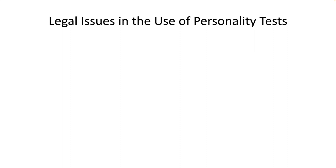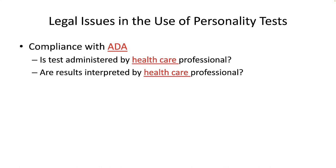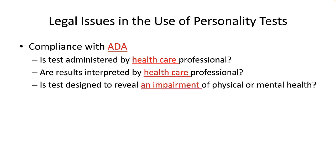As with most selection tests, there are legal issues associated with personality tests too. One must comply with the Americans with Disabilities Act when examining personality. If a test is administered or interpreted by a healthcare professional like a psychiatrist or licensed psychologist, it might be measuring psychopathology, which is a disability covered by the ADA — we cannot discriminate against otherwise qualified persons with mental disorders in any employment decision. A recent court case ruled that the Minnesota Multiphasic Personality Inventory, or MMPI, is no longer allowed for employment decisions because it is designed to diagnose psychopathology. Incidentally, the MMPI was one of the first personality inventories to include an indicator of impression management with its K Scale or Lie Scale.